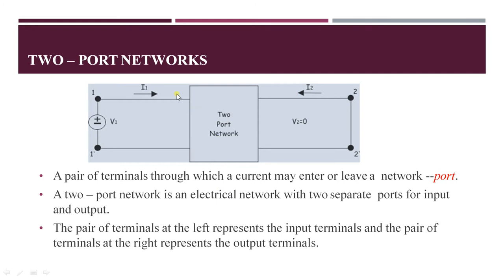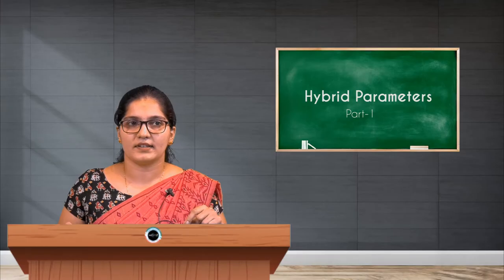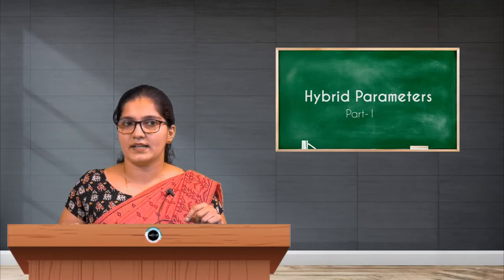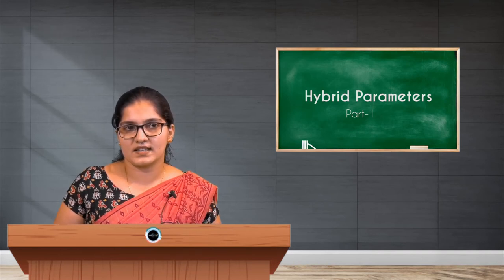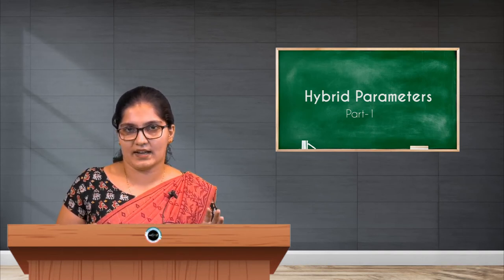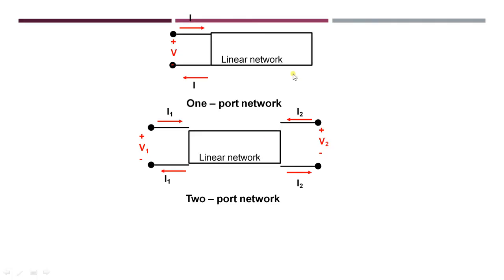Such a network is called a two-port network. In this representation, imagine there is a transistor inside the box, and its base and emitter form the input port while the collector and emitter form the output port. Such a network is called a two-port network.